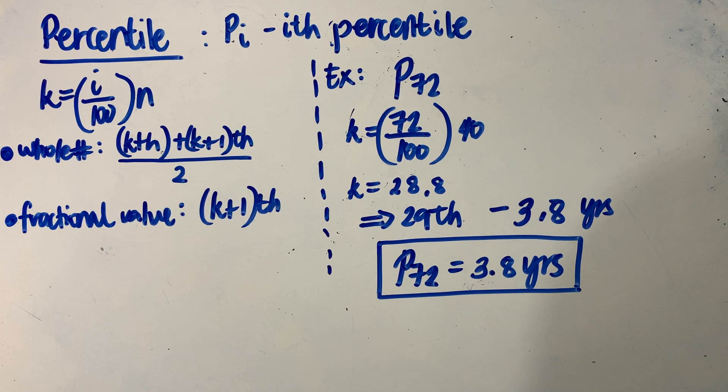Let's have another example. We're looking for the 72nd percentile of the same set of data involving the lives of 40 car batteries, expressed in terms of years.